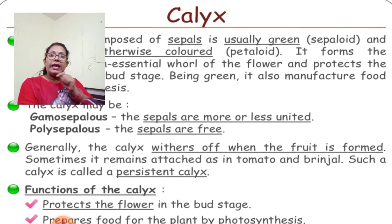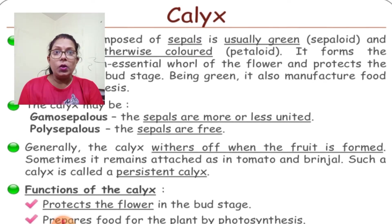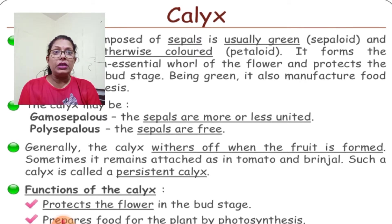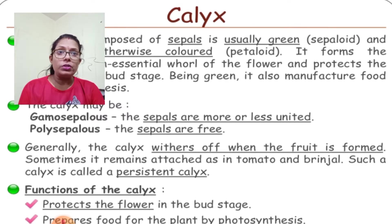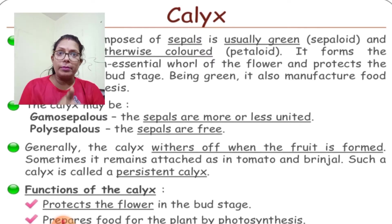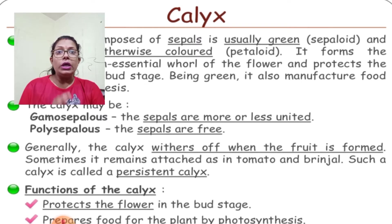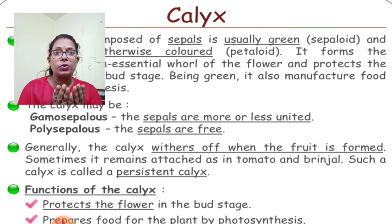The calyx is the outermost whorl — it is the first whorl of the flower and forms the non-essential whorl. Non-essential whorls include calyx and corolla, while essential whorls include stamen and pistil. Since sepals are green, they contain chloroplasts and can perform photosynthesis. In the bud stage, the calyx also provides nutrients and protection to the flower bud.